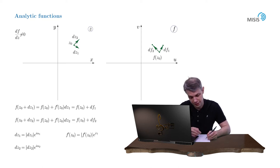Here gamma is its argument. Now we see that vector df1 is in fact the initial vector dz1 but rotated by angle gamma and stretched with the coefficient defined by the modulus of our derivative.